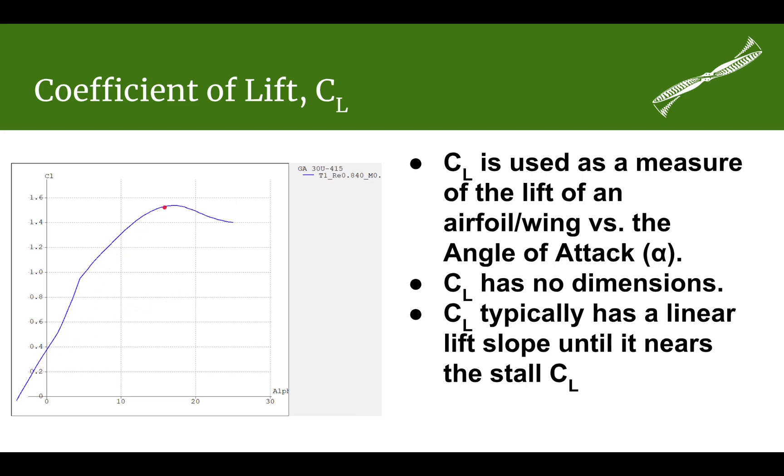This particular airfoil we're using is a GA-30U-415. For this airfoil, the 30 means the maximum thickness is at 30% of the chord. The 4 means it has roughly 4% camber. The 15 means the thickness of the wing is about 15% of the chord.